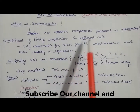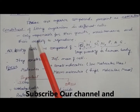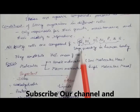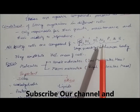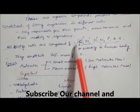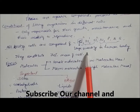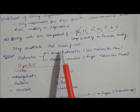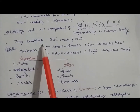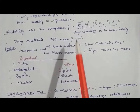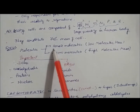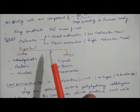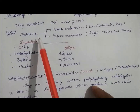Living cells are composed of basically carbon, hydrogen, and oxygen as the main elements, along with nitrogen, phosphorus, and sulfur. C, H, and O are present in large quantities — they constitute around 70 percent of the mass of the cell. The whole cell mass is largely C, H, O, along with N, P, and S.